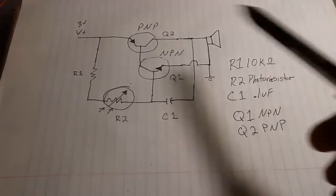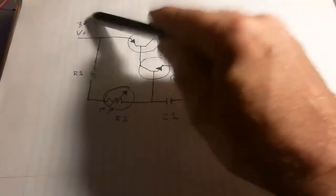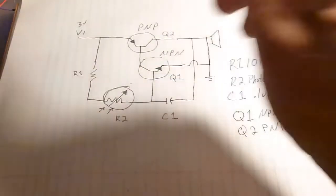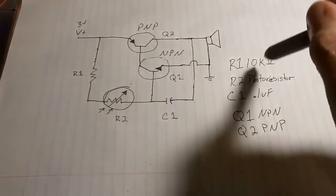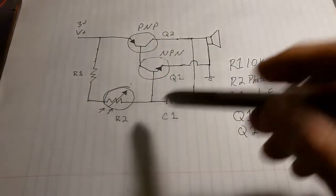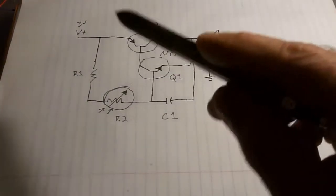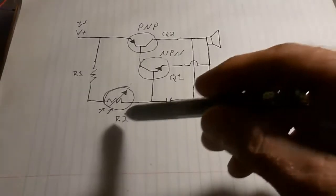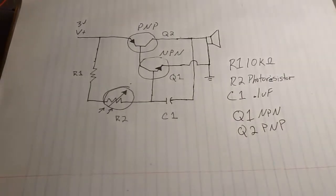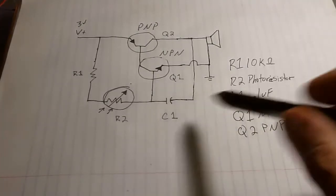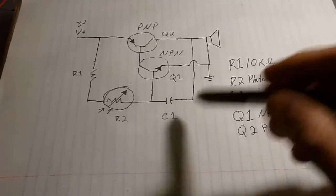Here we're going to have a power source which is going to be 3 volts. We got R1 which is going to be a 10k resistor. R2 is going to be a photoresistor, but I'm going to swap it out with a 1 megaohm resistor later on. We got C1 which is going to be a 0.1 microfarad capacitor.